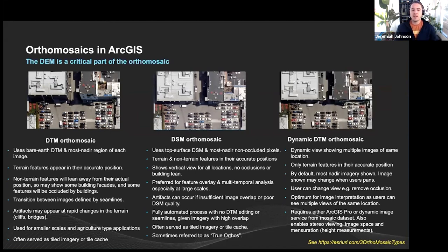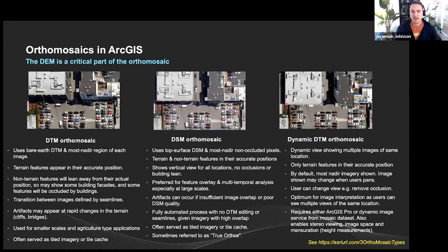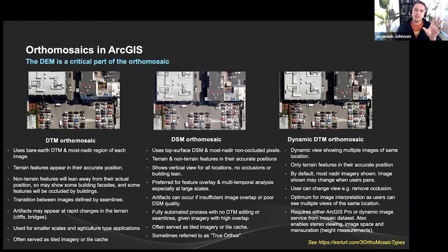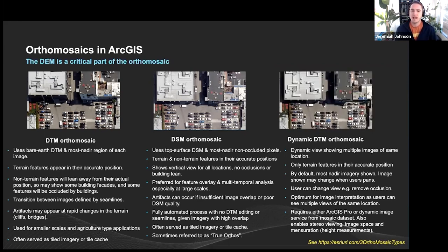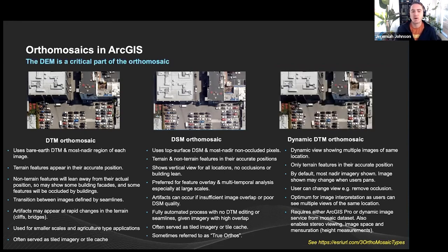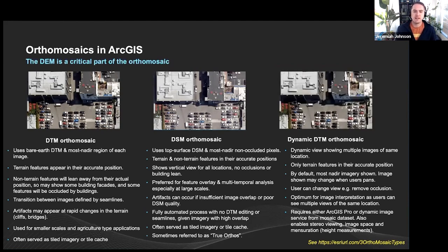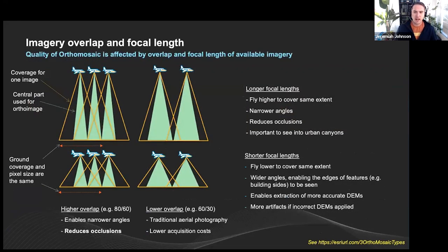There is also a dynamic DTM orthomosaic — something that Drone to Map can create — where you can select the most appropriate orthomosaic for the data you're trying to produce. Sometimes you want to see the facades of a building, or you can get building height information using the DTM orthomosaic. This is known as a dynamic orthomosaic where you can flip between a true ortho and a slightly offset DTM orthomosaic.